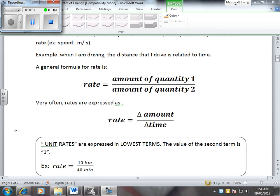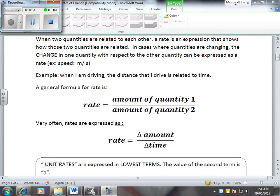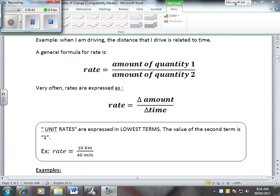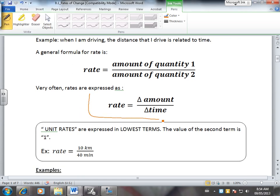A rate is when two quantities are related to each other, and it's an expression of how those are related. So in cases where quantities are changing, the change in one quantity with respect to the other can be expressed as a rate. So an example of this would be speed, so meters per second. When I'm driving, the distance that I drive is related to time. In general, the way we write rate is rate equals the change of amount over the change in time.